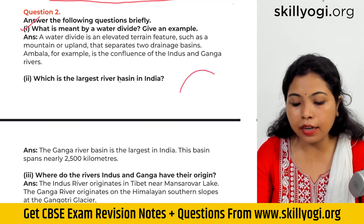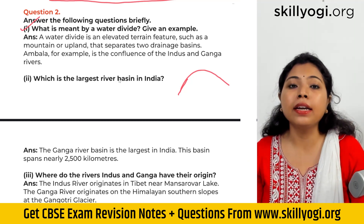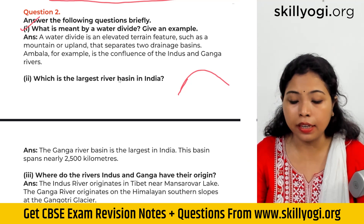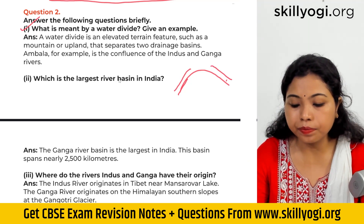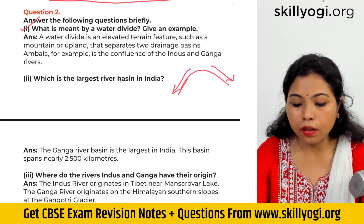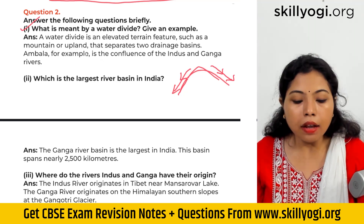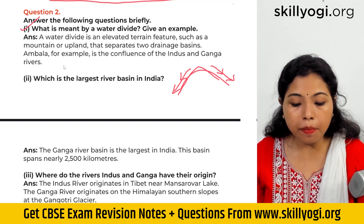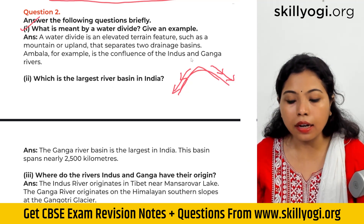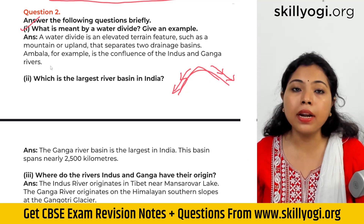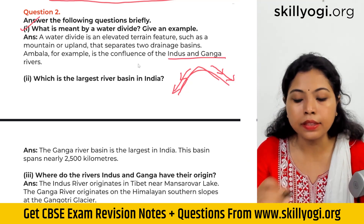Here we can see a water divide which divides two river courses separately. It is a river course, it is also a river course, and it is a water divide. For example, Ambala is a water divider which has divided the Indus and Ganga rivers separately.